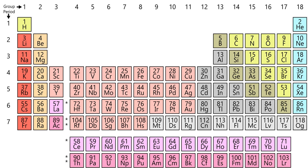The lower the values of ionization energy, electronegativity, and electron affinity, the more metallic character the element has. Conversely, non-metallic character increases with higher values of these properties. Given the periodic trends of these three properties, metallic character tends to decrease going across a period, and tends to increase going down a group or column, with some irregularities mostly due to poor screening of the nucleus by d and f electrons, and relativistic effects.